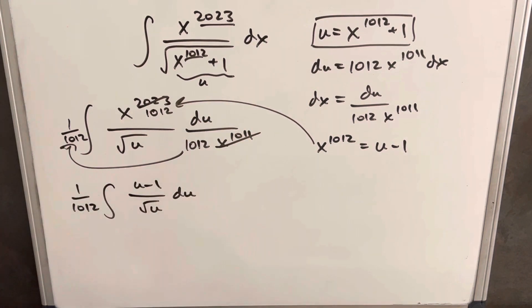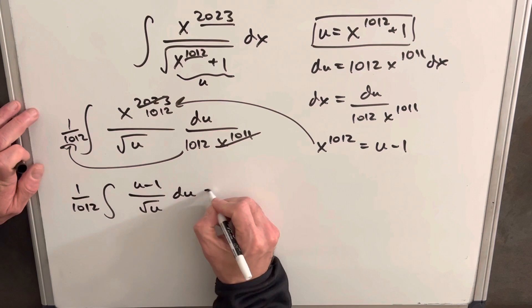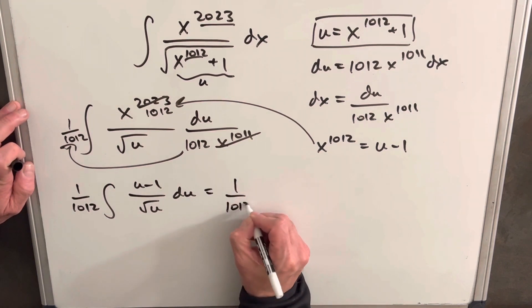Okay, and this is starting to look a lot nicer. What we'll do is we'll just break this up into two parts. We'll divide our square root of u into both these, so we're going to have our 1 over 1012.